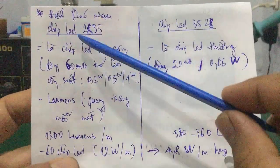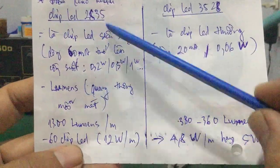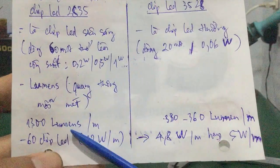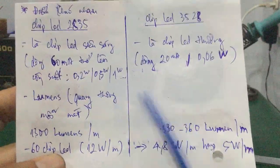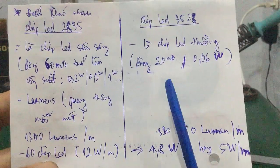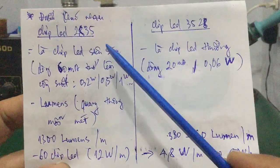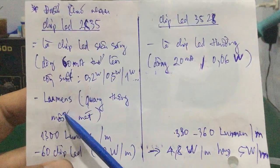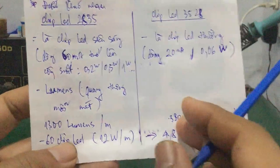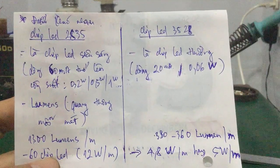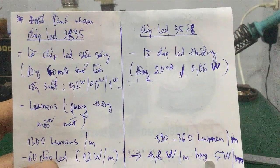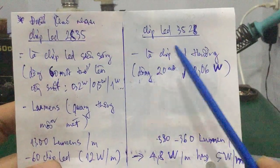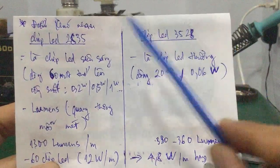Đây là những thông số cơ bản: dòng điện, công suất, điện áp. Điện áp hoạt động của cả 2 con chip LED này tầm khoảng 3V. Điểm khác nhau chính là ở dòng điện tiêu thụ, công suất, và độ lumen. Tiếp theo đây mình sẽ hướng dẫn các bạn cách phân biệt giữa 2 chip LED 3528 và 2835.